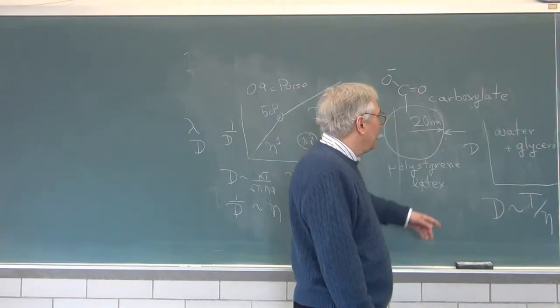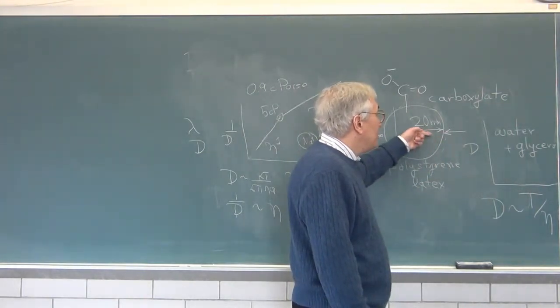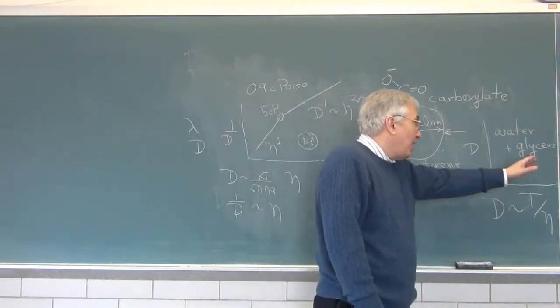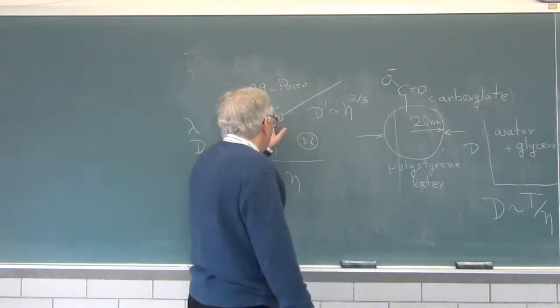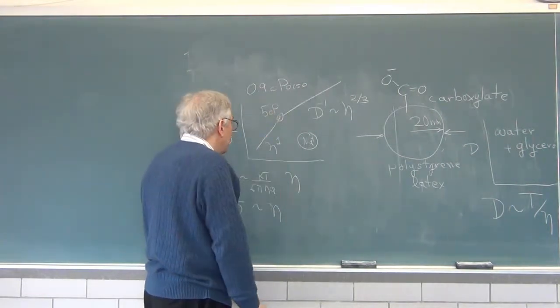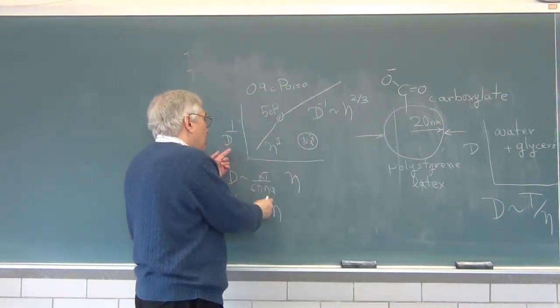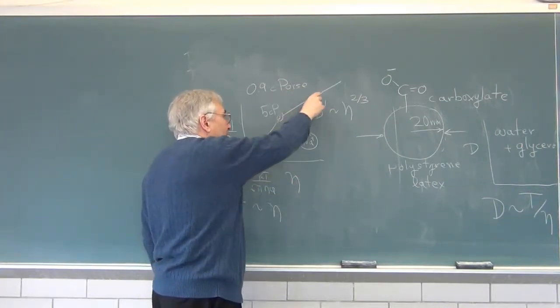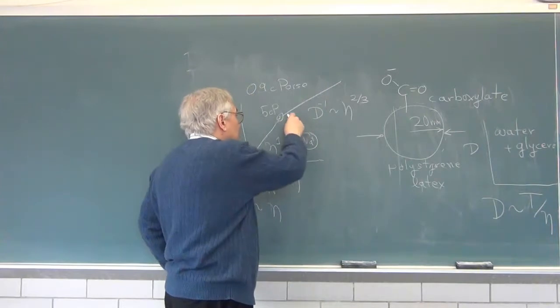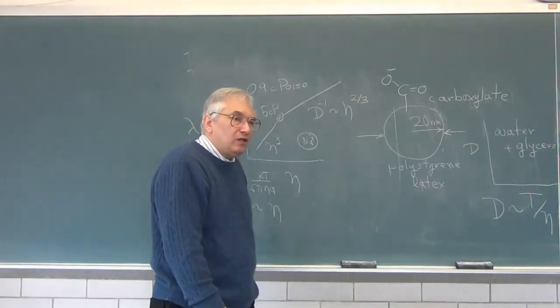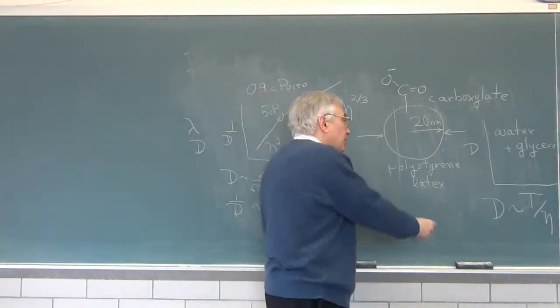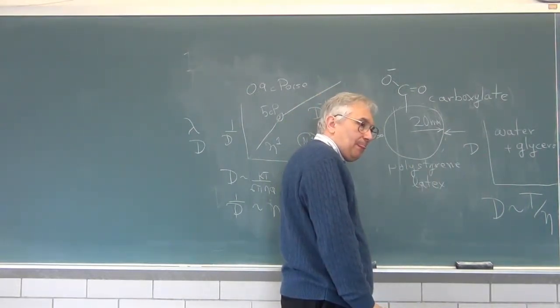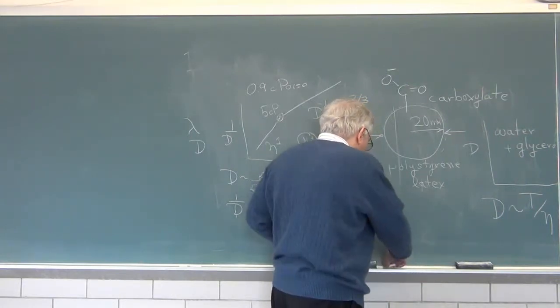However, if you're alert, you'll notice for these things, which are quite large, D is just linear in T over eta out here. For these small objects above about 5 centipoise, 1 over D is linear in viscosity only at first, and then there's a crossover. So this peculiar crossover effect in small molecule behavior does not repeat itself for mesoscopic particles.